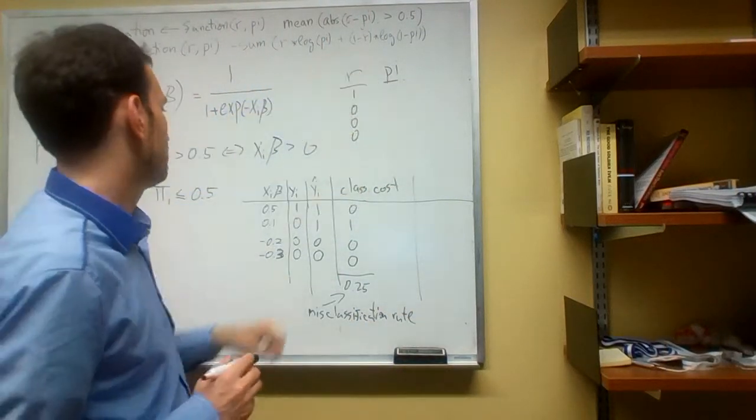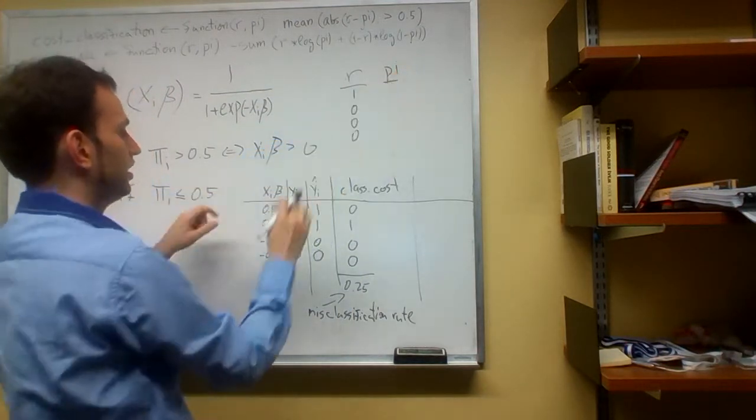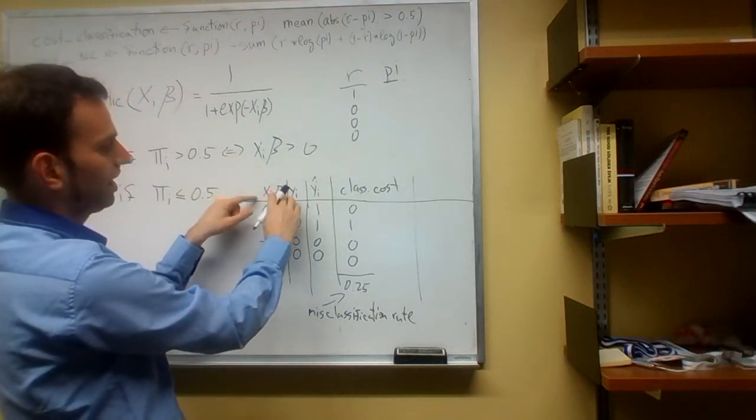Let's fill out this table. How do we fill it out? Pi i is just the logistic of xi beta.